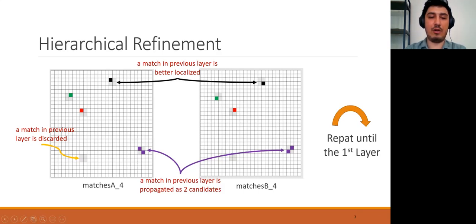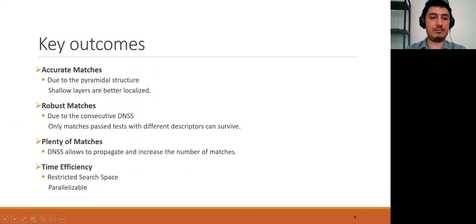DFM continues hierarchical refinement until the first layer. Hierarchical refinement algorithm has some key outcomes. First, it gives accurate matches. Due to the pyramidal structure of the network, shallow layers are better localized. Moving forward to the very first layer, DFM provides accurate matches. Also, it gives robust matches. It is due to the consecutive application of ratio test. That means only matches who pass several tests can survive. Otherwise, they are discarded. And note that in each test, hierarchical refinement uses different descriptors. Apart from the high-quality matches, DFM gives a great number of matches because DNSS allows propagation. Additionally, we can implement hierarchical refinement in a parallel way for each matching area. We should only execute iterations between layers in a serial way.